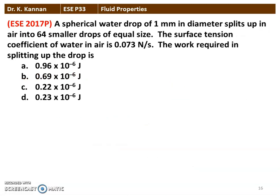The next question is from the 2017 question paper. A spherical water drop of 1 mm in diameter is split into 64 smaller droplets of equal size. The surface tension coefficient of water in air is 0.073 N/m. The work required in splitting up the drop is — we have 4 options. The correct answer is 0.69 × 10⁻⁶ joules.